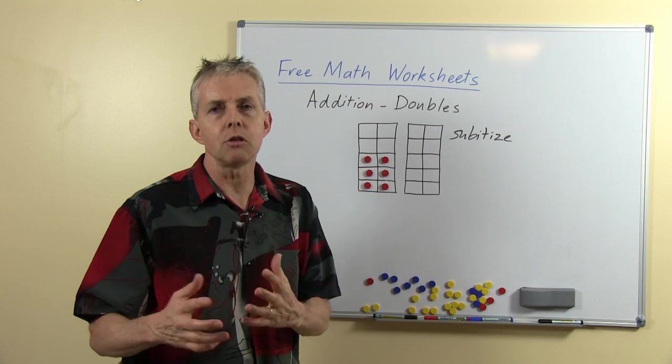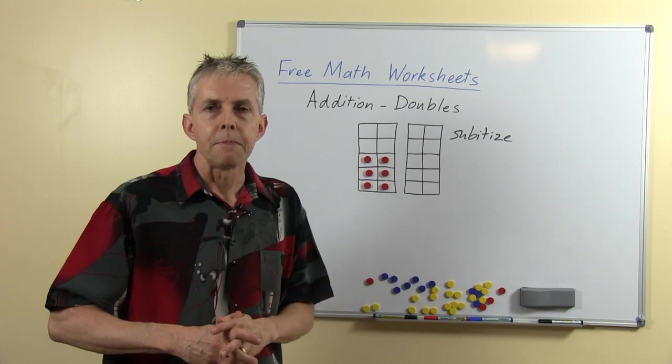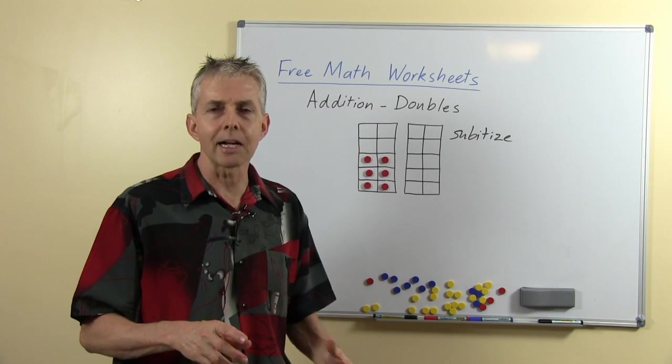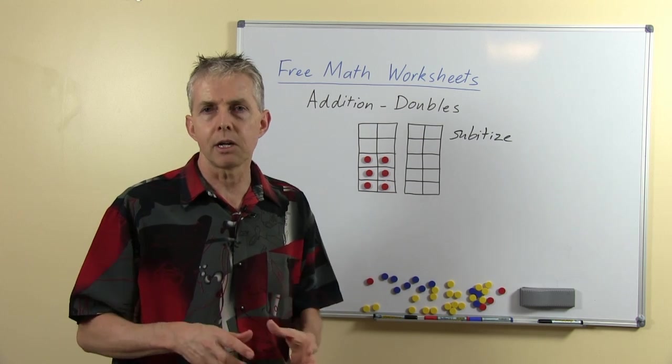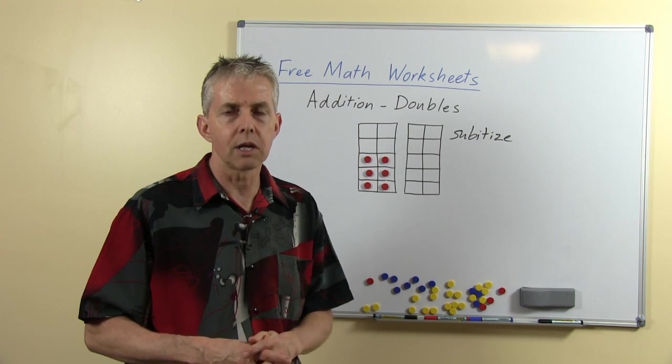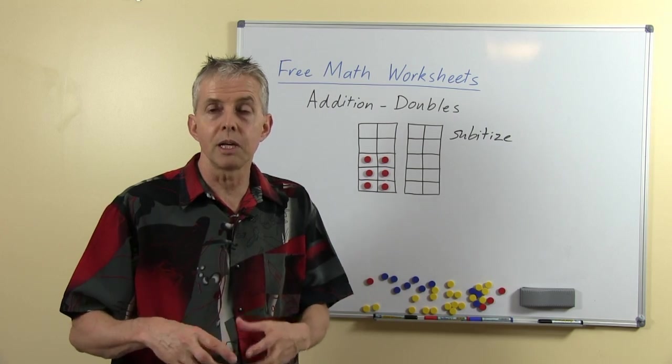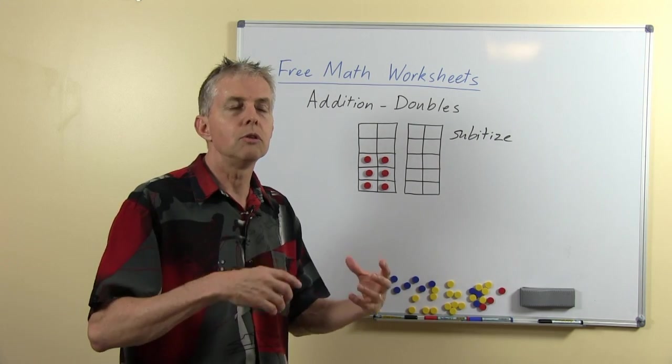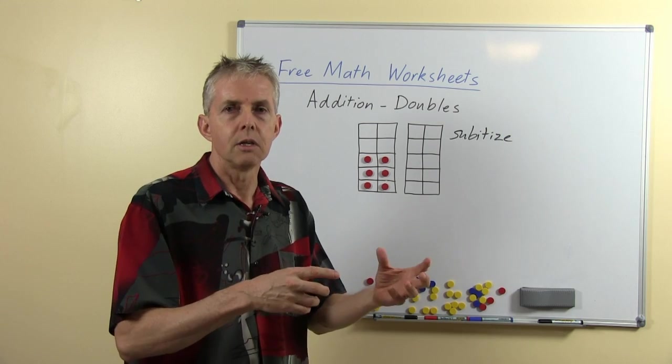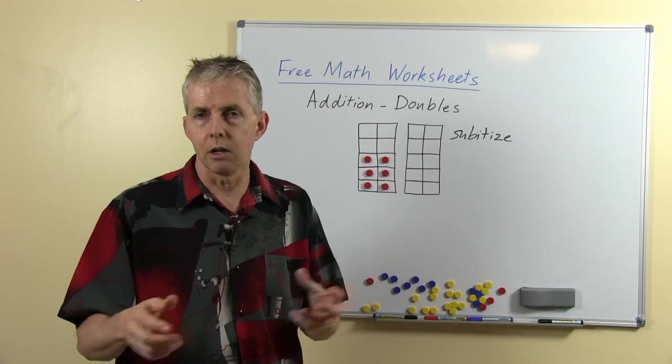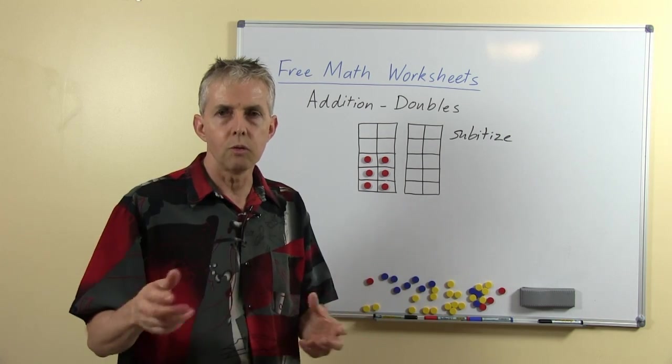That leads to the observation that these doubles number facts, there isn't actually a thinking strategy that we're asking the students to carry out. Rather, they're a set of number facts that we want them to become familiar with and to be able to associate the single with the double, so three with six and four with eight and so on.